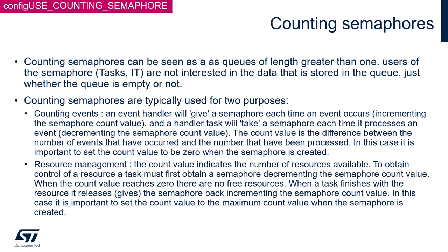The second purpose is resource management. The count value indicates the number of resources available. To obtain control of a resource, a task must first obtain a semaphore and decrement the semaphore count value. When the count value reaches 0, there are no free resources left. When the task finishes with the resource, it releases it — it gives the semaphore back — incrementing the semaphore count value.